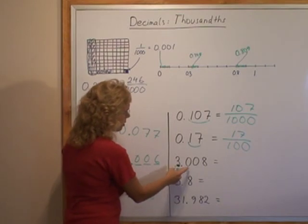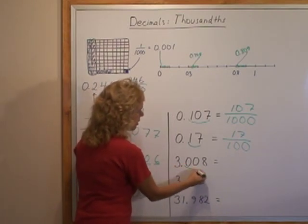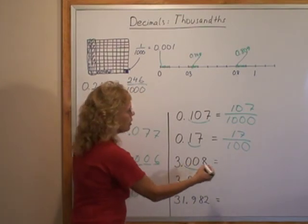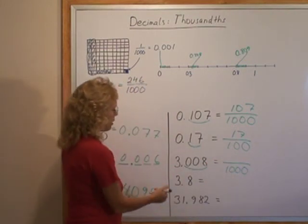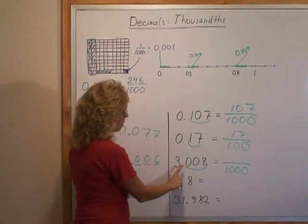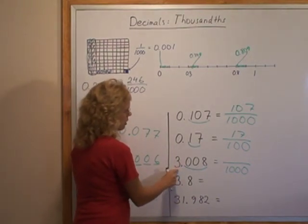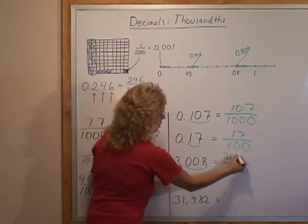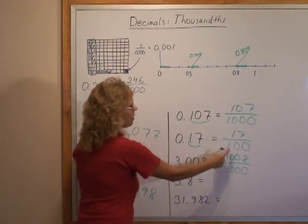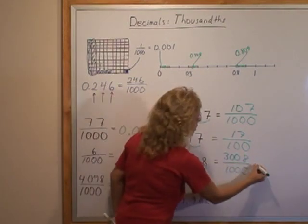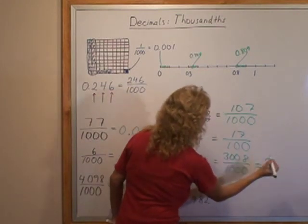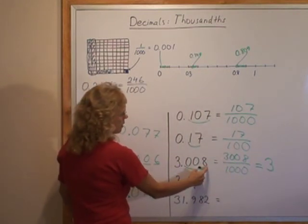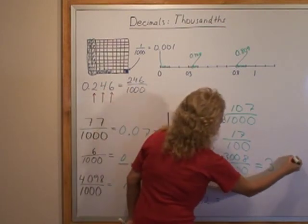And here's 3.008. Since we have three decimal digits, as a fraction it's going to have thousands. We just write this whole number. Imagine there's no decimal point. Three zero zero eight. That's how it is as a fraction. We can also write it as a mixed number. Three here becomes three, and then eight here is eight thousandths.